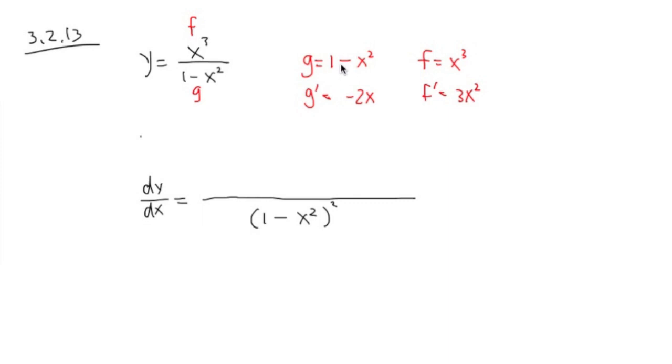All right, so for the pairing on the top, you pair this one with f' together. So you have parenthesis 1 minus x squared times 3x squared.